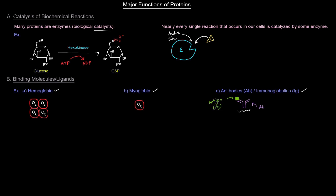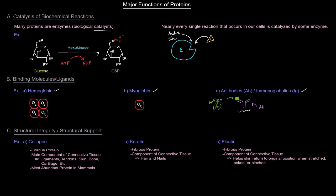Another major function of proteins is structural integrity or structural support. And so here we're talking about proteins that don't exactly play a role in helping a reaction move forward. They don't bind anything specifically. They're just important in maintaining structure. So some examples here are collagen, keratin, and elastin. And these are all fibrous proteins. And when I think of a fiber, I think of like a rope.